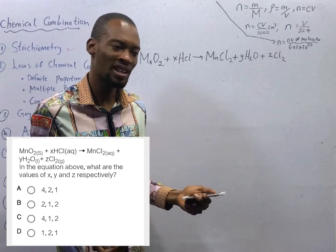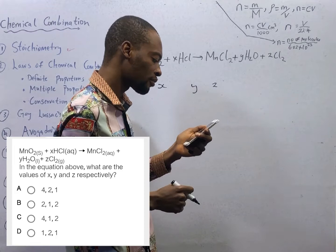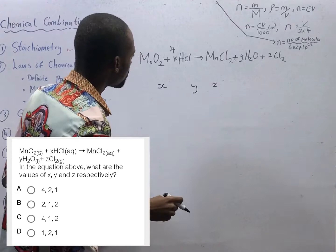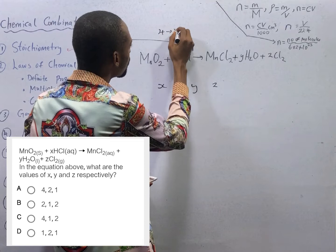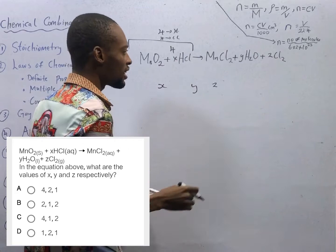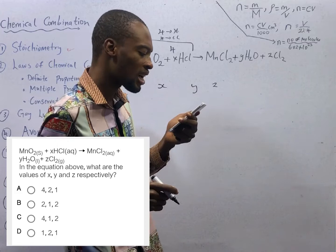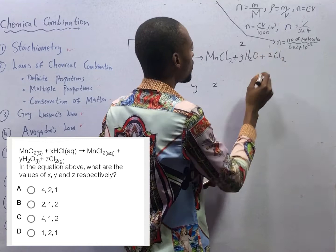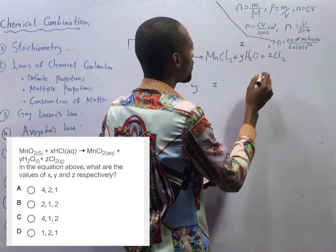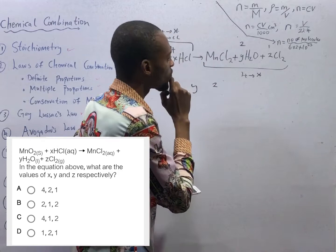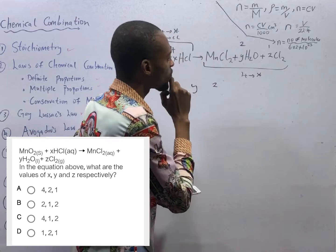Respectively means S first, then Y, then Z. Option A says S is 4. If S is 4, it simply means in the reactant side we have 4 hydrogen and 4 chlorine. In the product side, it says Y is 2 and Z is 1. If Y is 2 and Z is 1, how many hydrogen would you have in the product side? In the product side, we have 4 hydrogen. And how many chlorine? 2 here, 1 here — that is 4 chlorine.